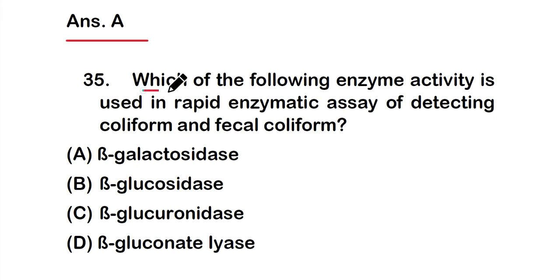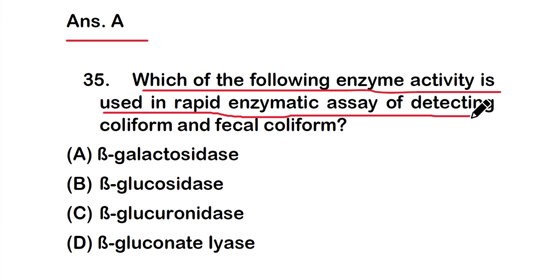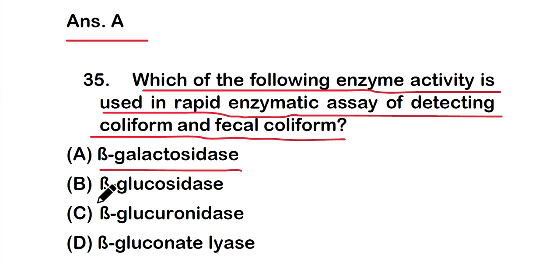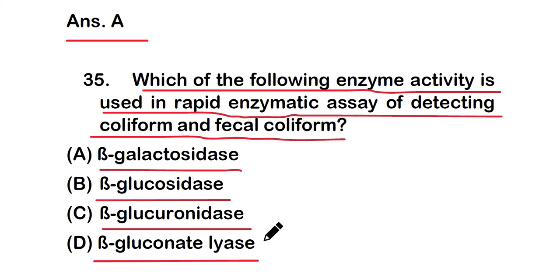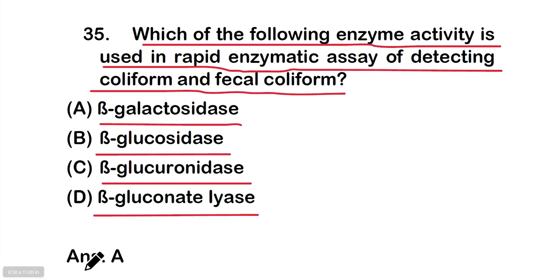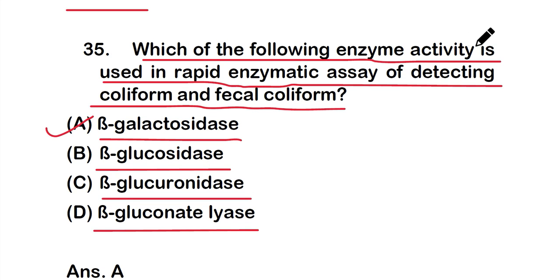Question number 35: Which of the following enzyme activities is used in the rapid enzymatic assay for detecting coliform and fecal coliform? Options: A) beta-galactosidase, B) beta-glucosidase, C) beta-glucuronidase, or D) beta-gluconidase. The correct answer is option A — beta-galactosidase enzyme activity is used in the rapid enzymatic assay for detecting coliform and fecal coliform.